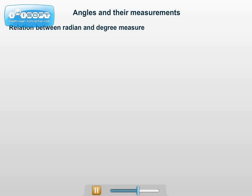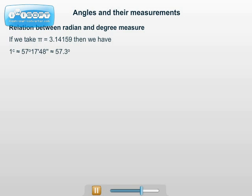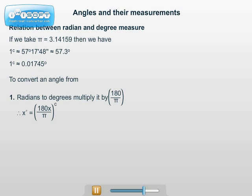Relation between radian measure and degree measure. If we take pi equal to 3.14159, then 1 radian is approximately 57 degrees, 17 minutes, 48 seconds — that is 57.3 degrees. And 1 degree is approximately equal to 0.01745 radian. Since 1 radian equals 180 upon pi degrees, to convert an angle in radians to degrees, multiply that angle by 180 upon pi. Therefore, x radians equals 180 upon pi into x degrees.